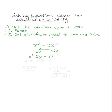Now I will factor. For this problem, it looks like there is a GCF of x. So I will pull out the x, which leaves me with x times (x minus 2), and that is still equal to zero. Now we've done step two, factoring.